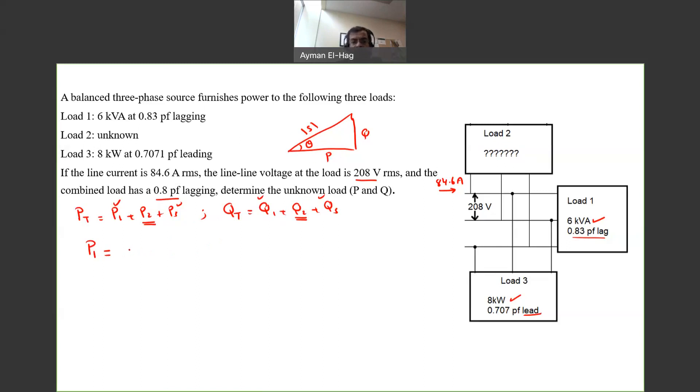S1 times the power factor 1. The power factor is equal to P over S. From this, we can say that P1 equals 6 times the power factor, which is 0.83.